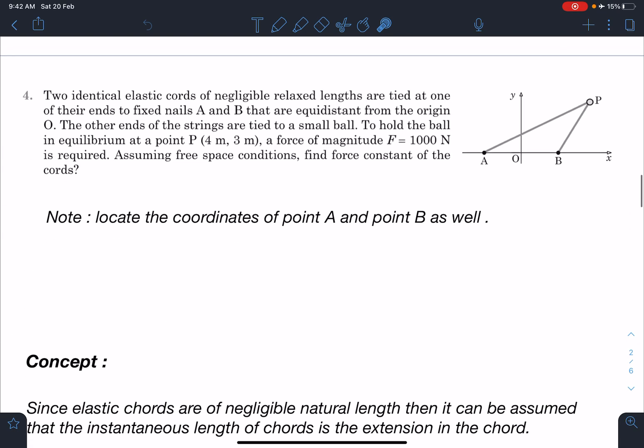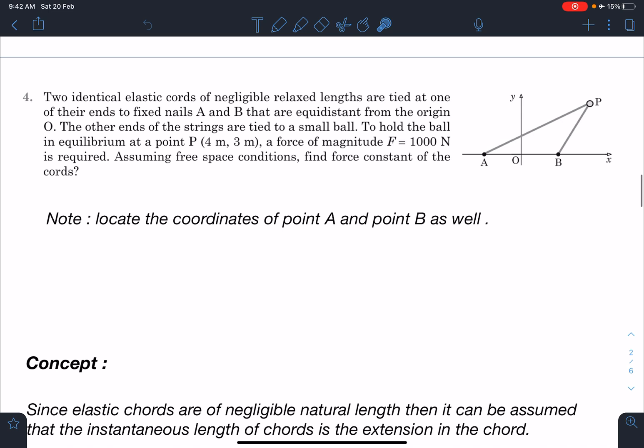Here is the statement of this problem from pathfinder, laws of motion, build your understanding, problem number four. Two identical elastic cords of negligible relaxed length are tied at one of their ends to fixed nails A and B that are equidistant from origin O.